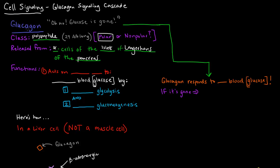So what is glucagon's function? When you think about glucagon, you think oh no, glucose is gone. So glucagon responds when glucose is gone - it responds specifically to low blood glucose levels. So if it's gone, make more. So essentially glucagon's role is it acts on liver cells to increase blood glucose levels. So it responds to low blood glucose levels by making more.